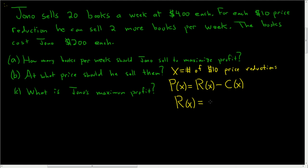Normally in other problems, that would be X times little p of X, where X was the number of units. But here, X is price reduction, so we can't do that. So it'll be the quantity function times the price function. We can write this as p of X times Q of X — it just looks a little better. Let's go ahead and start the problem.